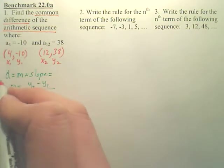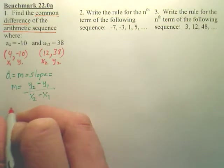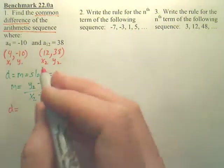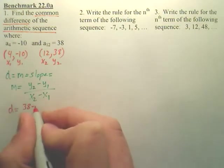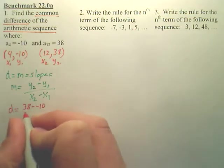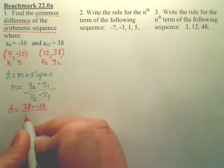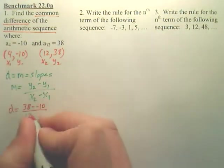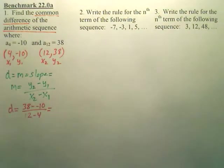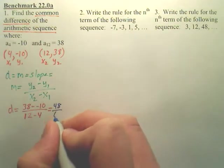The formula for that is M equals Y2 minus Y1 over X2 minus X1. So let's use the formula. Remember, we're going to use D instead of M because D and M are the same thing. So if I want the common difference, I'm going to take Y2, which is 38, minus Y1, which is negative 10, and divide by 12, which is X2, minus X1, which is 4. And that would give you 48 over 8.